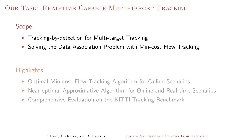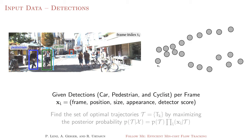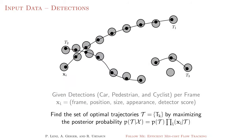In this work, we are interested in multiple target tracking by MinCostFlow Data Association. We propose an optimal algorithm for online scenarios and an approximation for real-time applications. Given a set of detections per frame, our goal is to find the optimal set of trajectories subject to unary and pairwise constraints.